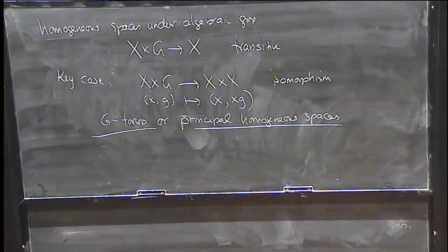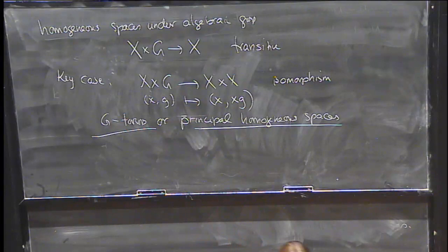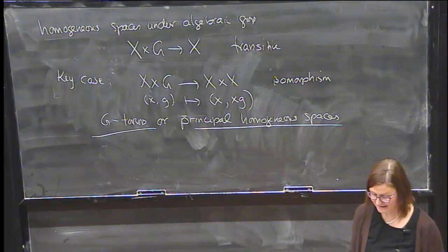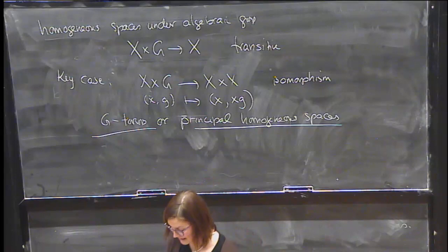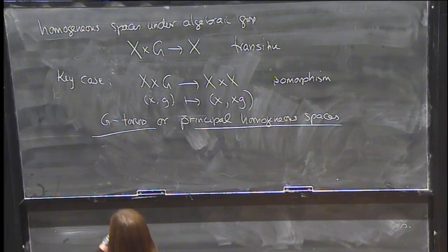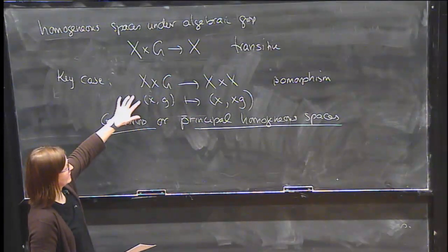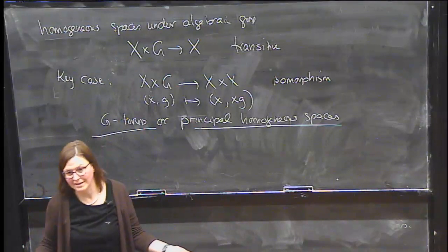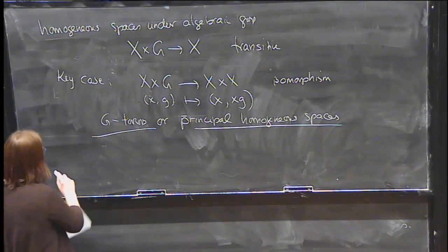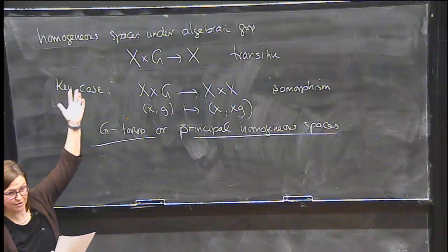There's a base field F over which everything has been defined. I found a quote from Weil in 1954: 'The pair consisting of such a space and a point on it does not materially differ from the group. Thus there's little incentive for studying these spaces as long as one is not paying attention to the ground field, or if the ground field is algebraically closed.' So even in this black-and-white situation — either it has no point, or if it has a point it's isomorphic to the group as a G-space and is trivial — it really does give general information about more general homogeneous spaces.